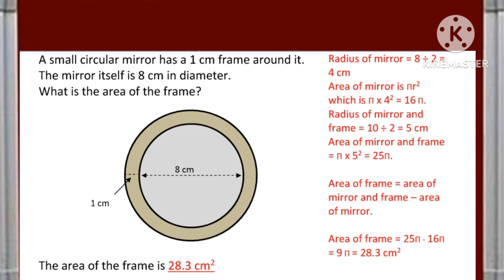Now the radius of mirror with frame will be 10 divided by 2 that is 5 centimeter and area of mirror with frame will be pi 5 square that is 25 pi. Now the area of the frame will be 25 pi minus 16 pi that is 28.3 centimeter square.